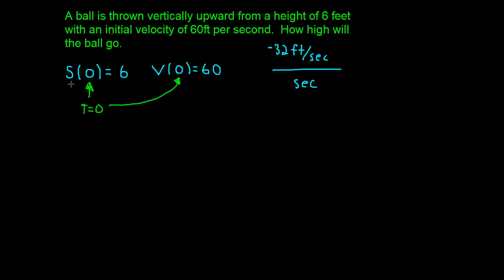So just so you know, my function S is my position function, and my function V is my velocity function. So the position when time equals zero is six feet, and my velocity when time equals zero is 60 feet per second.